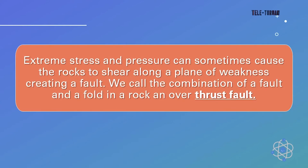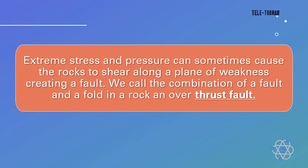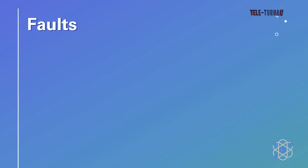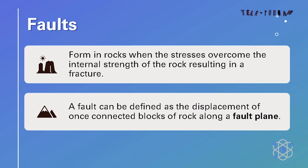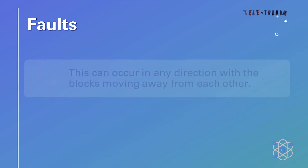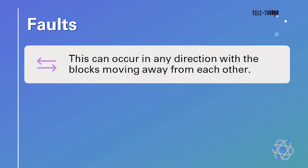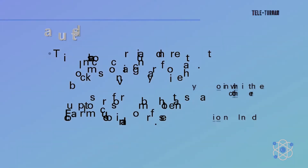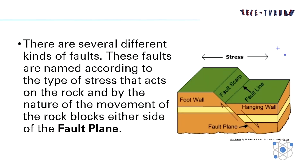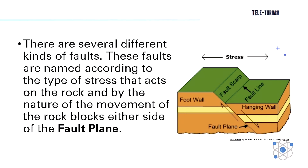Extreme stress and pressure can sometimes cause rocks to shear along a plane of weakness, creating a fold. We call the combination of a fold and a fault in a rock an overthrust fold. A fault can be defined as the displacement of once-connected blocks of rock along a fault plane. This can occur in any direction, with the blocks moving away from each other. Faults occur from both tensional and compressional forces.